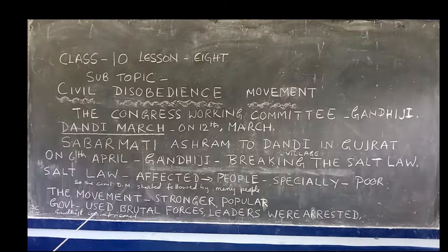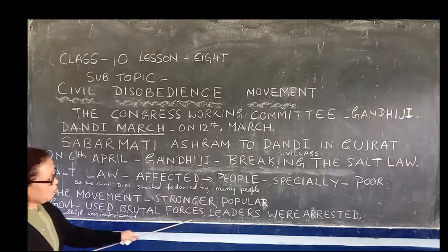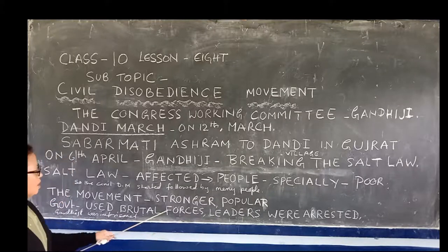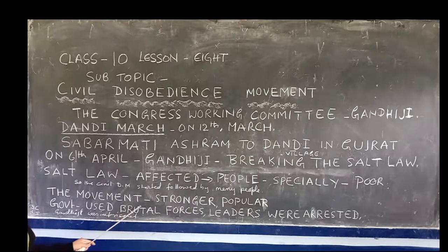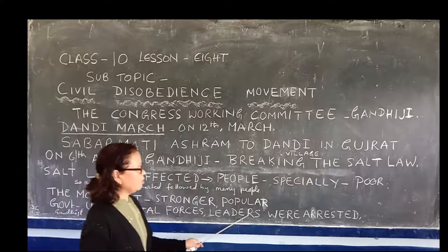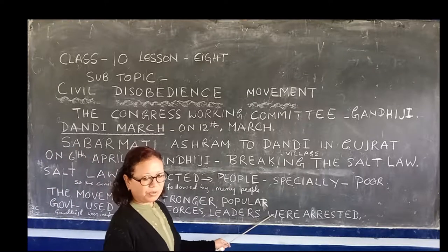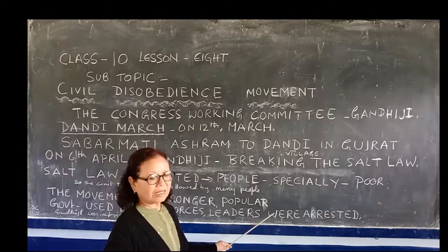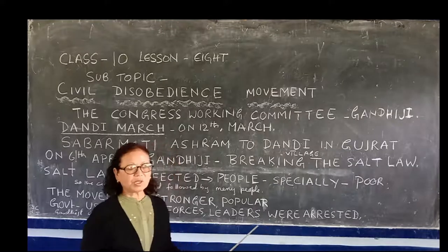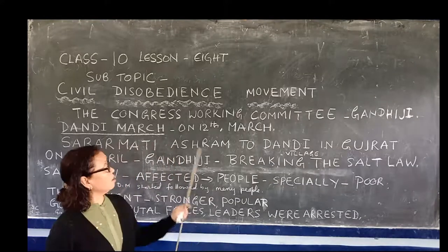The British used brutal force against the protesters. The leaders were arrested, people were mercilessly beaten up, and many people and leaders were imprisoned. Gandhiji was also imprisoned.